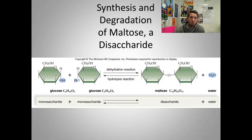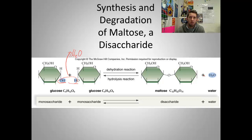Here's an example — we're going to put two glucose molecules together. Going through dehydration synthesis, you can see that a hydroxyl group is robbed from one monomer and a hydrogen is robbed from the other. You put them together and you make water — there's your dehydration event. And you have a bond extending between the two monomers. So now we went from two monosaccharides to a disaccharide, at the expense of water. Water is lost.